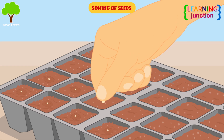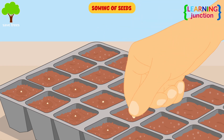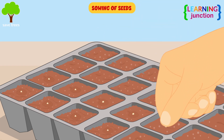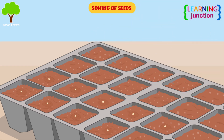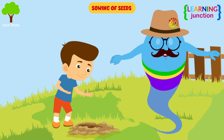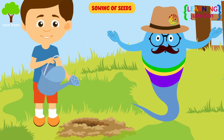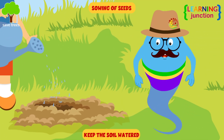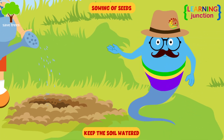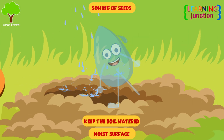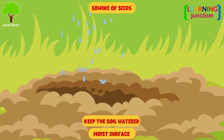Step 2: Sowing of seeds. Seeds can be sown in the nursery and then transplanted to the field, or they can be sown directly on the field. It is important to keep the soil watered so that the surface never dries out, but remains constantly moist.